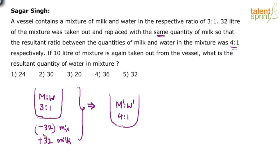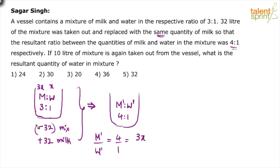First and foremost, we will have to establish the initial quantities of milk and water. Let milk be 3x and water be x. When you remove 32 liters of mixture, you must divide 32 in the ratio of 3 is to 1 — so 3 fourths of 32 and 1 fourth of 32. That gives 24 liters of milk and 8 liters of water removed.